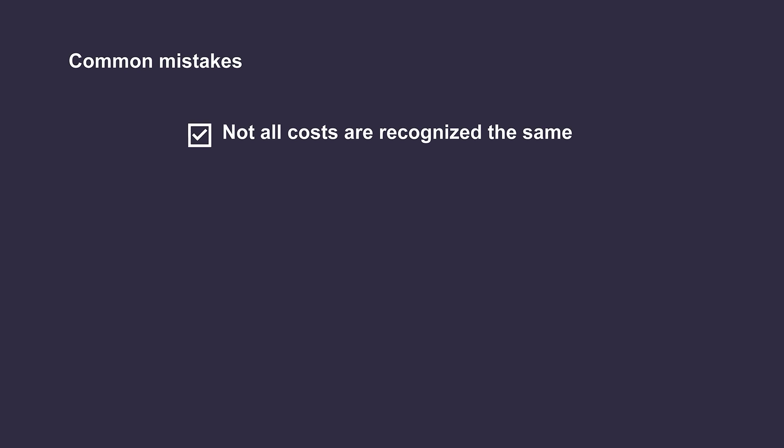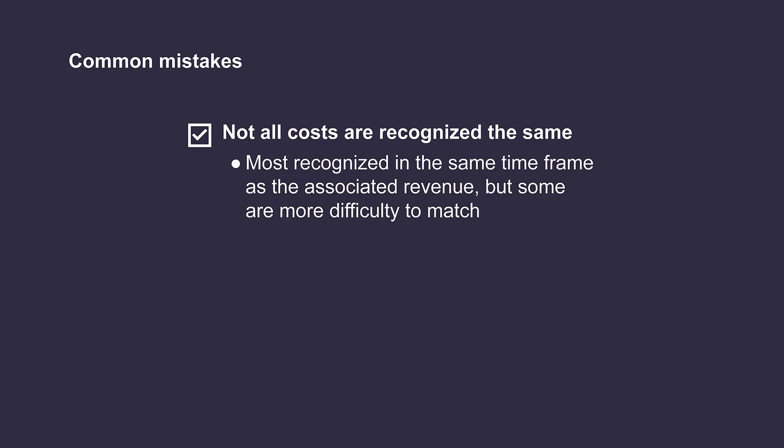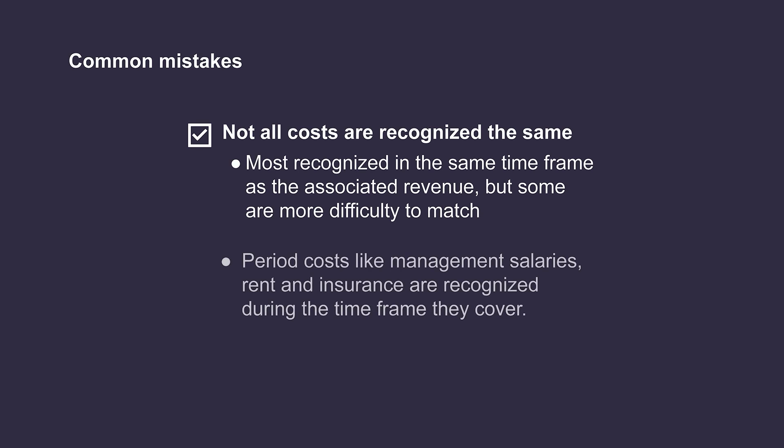Now that we have a good understanding of how to recognize an expense, let's run through a few common misconceptions. Some expenses are difficult to match up with the timing of revenue due to their nature. These are called period costs and include things like management salaries, rent, and utilities. These types of expenses are typically recognized in the period they are associated with.